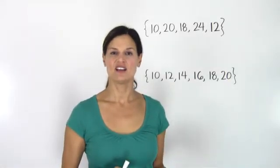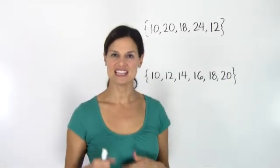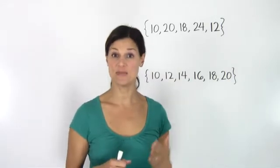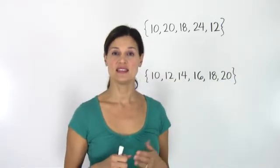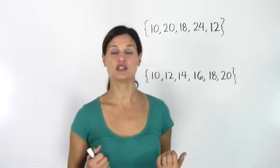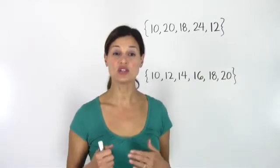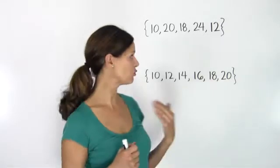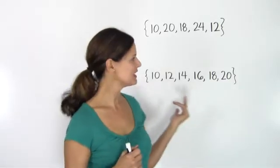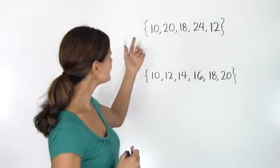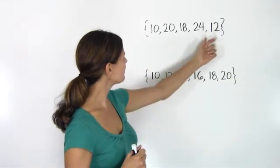Median involves arranging the values from least to greatest and finding the middle value. This will not reveal an average value, but rather it will show you the value that lies right in the middle of the others. Let's take a look at an example with five values.